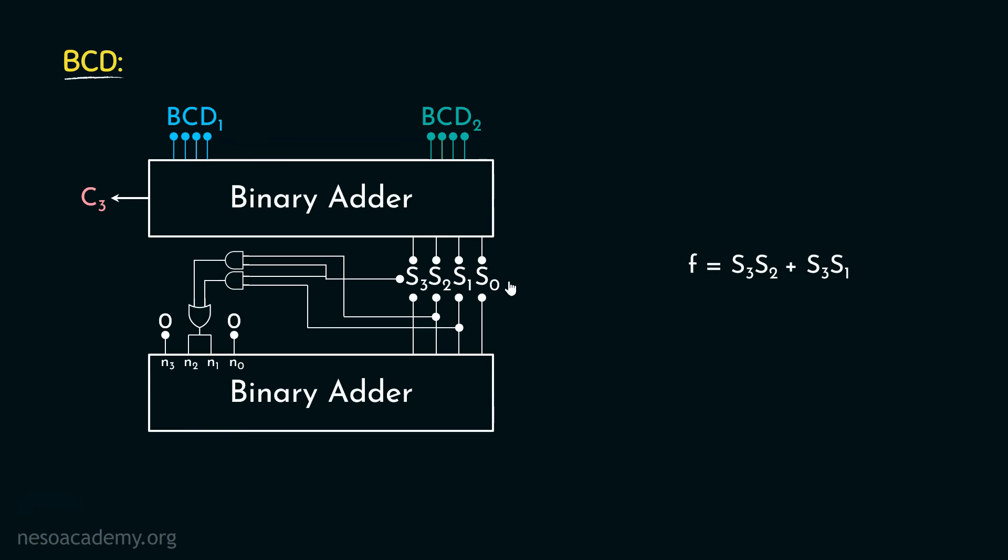However, if the obtained result is valid, then through N2 and N1, we will get only 0s. So basically, the valid BCD will be added with 0 only. Now if you remember, in the previous session we observed that not only for the invalid patterns we are going to use the correction, we also will have to use the correction if the carry is generated.